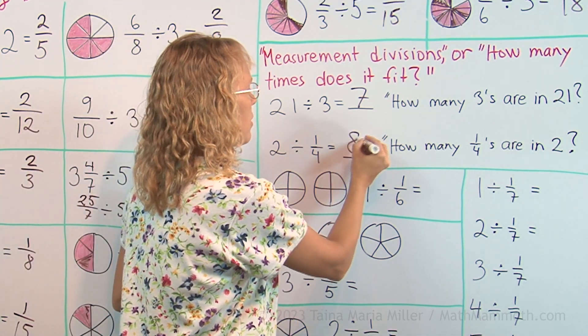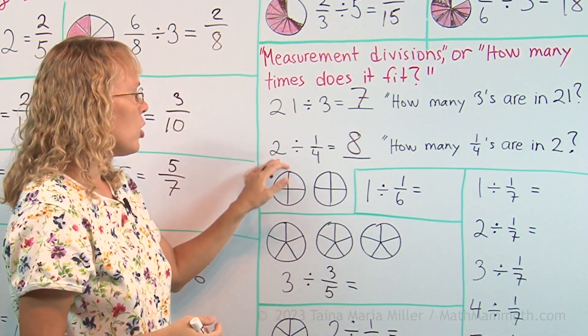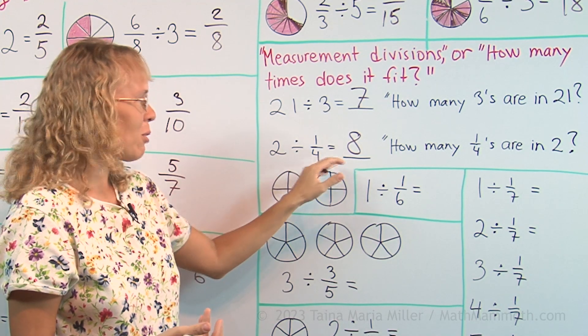The answer is eight, right? Simply eight. Two divided by one-fourth equals eight.